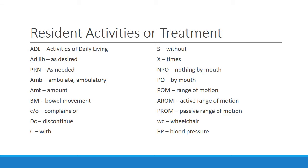Some activity and treatment abbreviations: ADL means activities of daily living — bathing, dressing, grooming, eating, all those things are ADLs. Ad lib means as desired, so on a care plan you may see that someone is up ad lib, meaning they can get up and move around whenever they want without calling you. PRN means as needed — for example, a diabetic resident can have snacks PRN, whenever they're feeling shaky or need to eat something.